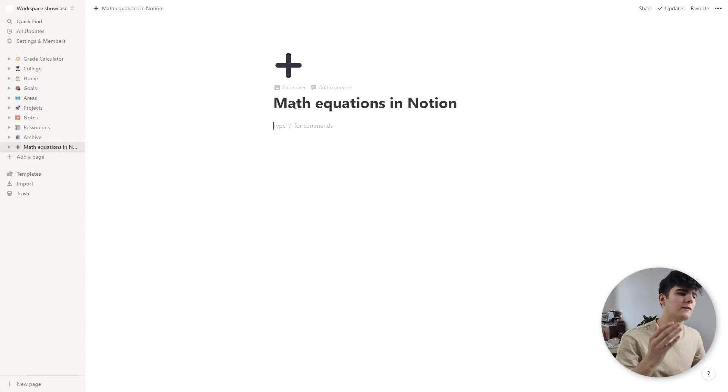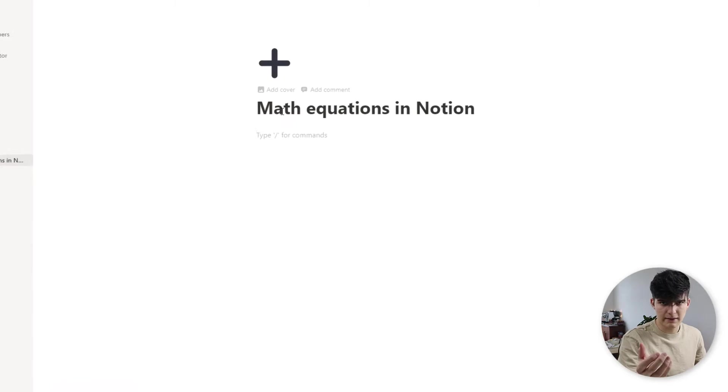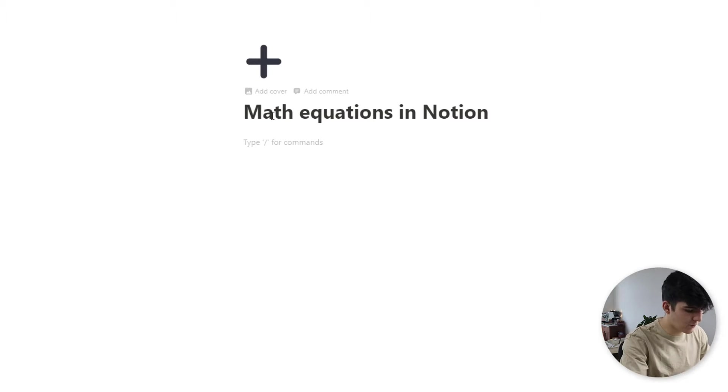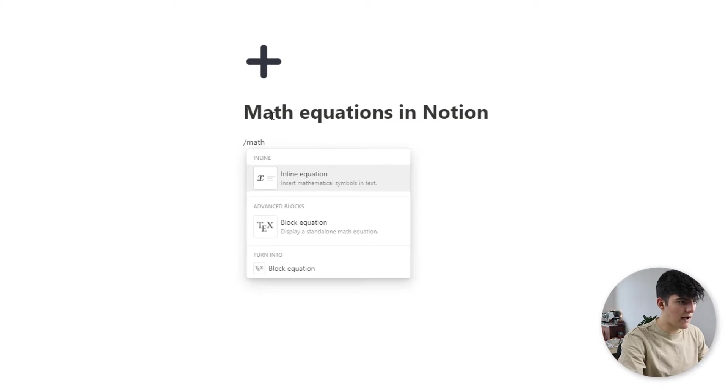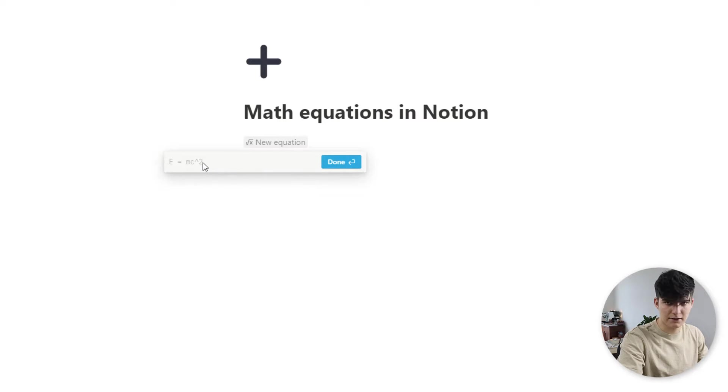Alright, so now I've got this new page in my Notion workspace open. First of all, there are two ways to implement equations in Notion. The first one being the inline block. So if you just type in math, then you'll see this option for an inline equation and then you have the option to actually add in your equation. For example, I could say a squared plus b squared equals c squared. And this is a basic inline equation.